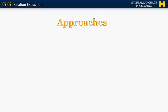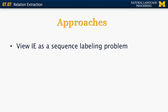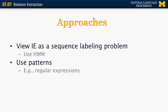What are the common approaches that are used in information extraction and specifically relation extraction? Information extraction is viewed as a sequence labeling problem, and people use HMMs. They can also use patterns, for example, regular expressions. Regular expressions is something that comes up a lot in natural language processing, so I would like to spend a little bit of time to talk about it here. I will do this in the next set of slides.